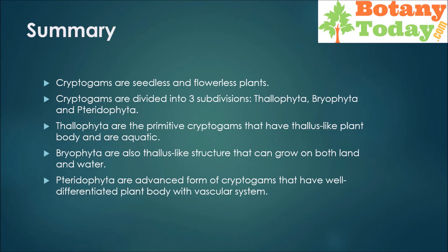In the most accepted five-kingdom classification by Whittaker, bacteria are placed as a separate kingdom known as kingdom Monera and not included under the plant kingdom. Similarly, fungi are excluded from the plant kingdom and placed separately as kingdom Fungi, as these lack chlorophyll, which is a characteristic feature of the plant kingdom.